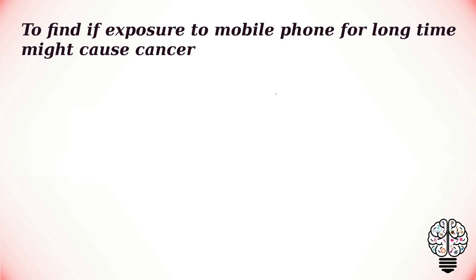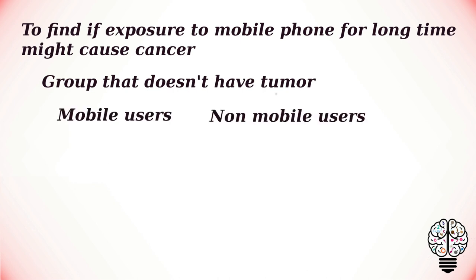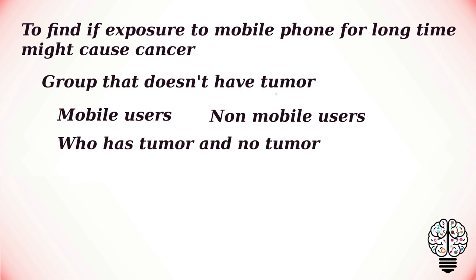Let's look at an example. A researcher might want to find if long-term exposure to mobile phones might cause brain tumors. The researcher would take a cohort who doesn't have brain tumors and classify them as mobile phone users and non-mobile phone users, then follow them up for a period of time. After some time, the researcher observes which group developed tumors — those who used mobile phones for a long period of time.